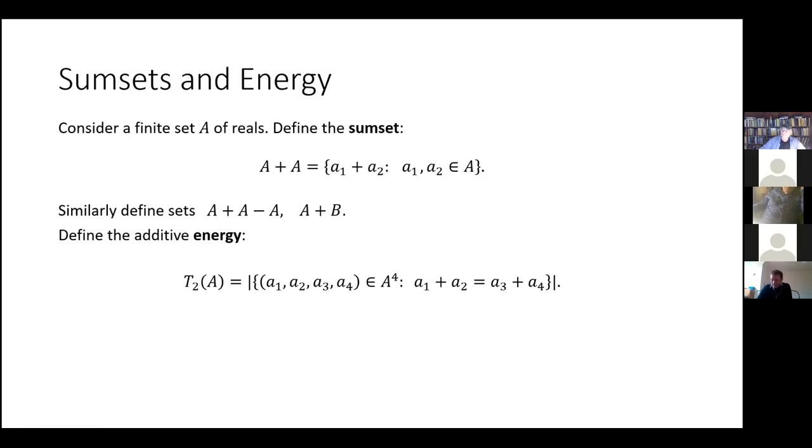So the T2 energy is going to be the number of solutions to the equation A1 plus A2 equals A3 plus A4, where all of our terms are elements of some set A. Now this might not be the most standard notation you're familiar with seeing. Often we write EA instead of T2A, but this two is going to refer to the fact that there are two summands on either side, and this is going to be the thing we're going to be generalizing with. We're going to be considering longer sums later in the talk.